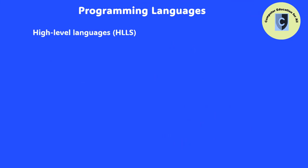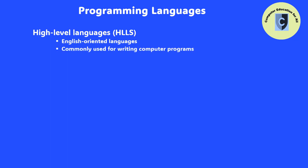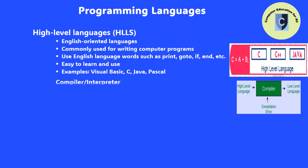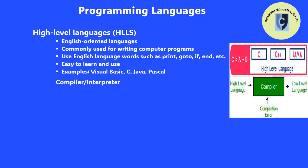High-level languages are English-oriented languages and they are commonly used for writing computer programs. These languages use English language words such as print, goto, if, end, etc. Therefore, they are easy to learn and use. Some examples of high-level languages are Visual Basic, C, Java, and Pascal. A program known as a compiler or interpreter is required to translate a high-level program into machine language.